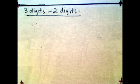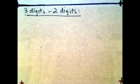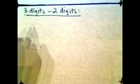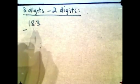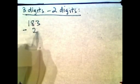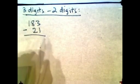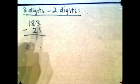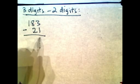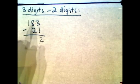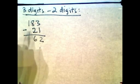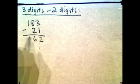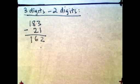Now we have 3 digits minus 2 digits. Let's say we have 183 minus 21. 3 minus 1 is 2, 8 minus 2 is 6, and then you still have that 1 — bring it down. The answer is 162.